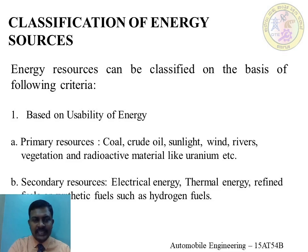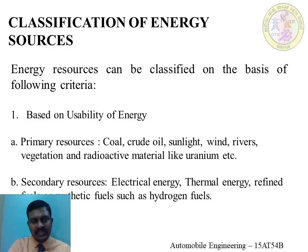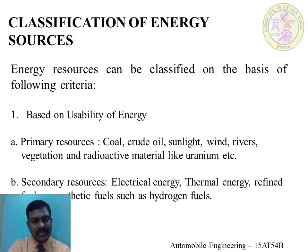Based on usability of energy, we can have two types: primary resources and secondary resources. Primary resources are those available in nature, but some sort of processing or transformation is required before use. For example, coal, crude oil, sunlight, wind, natural vegetation, and radioactive materials all exist in nature but cannot be used directly — they must be transformed from their basic origin.